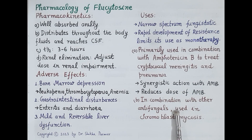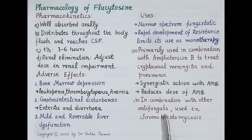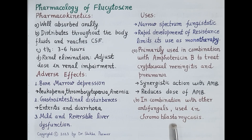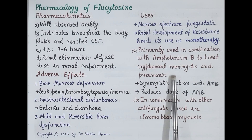In addition, in combination with other antifungal drugs, flucytosine is used in the treatment of chromoblastomycosis. So the main use of flucytosine is in the treatment of cryptococcal meningitis, in combination with amphotericin B.